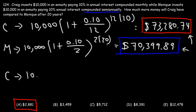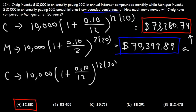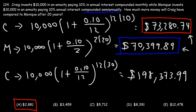Now let's consider the effect of time. If Craig keeps his money in this account for 30 years instead of 20, it's going to go up to $198,373.99 — a lot higher than $73,000. So time plays a much more important role than whether it's compounded monthly or semi-annually. Based on these three problems, the two biggest factors affecting growth in an account are the interest rate and the time spent in the account. Those two things will greatly affect how much money is in the account.